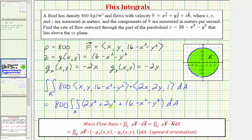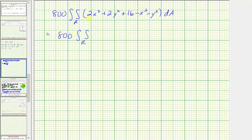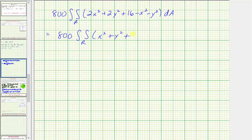Let's simplify this on the next slide. Combining the like terms, we have x squared plus y squared plus 16, differential A.